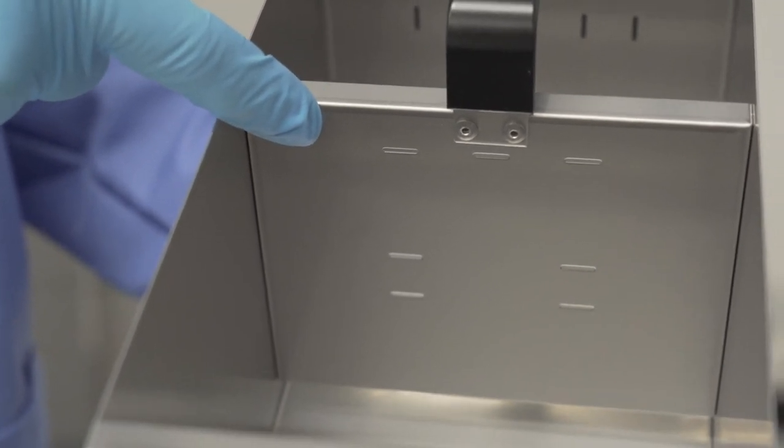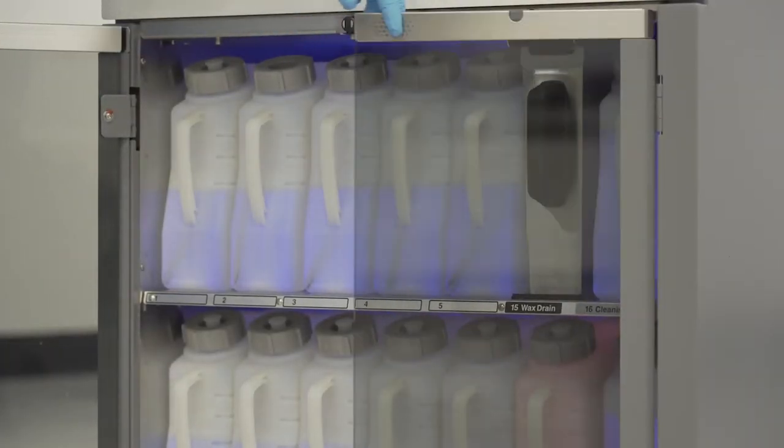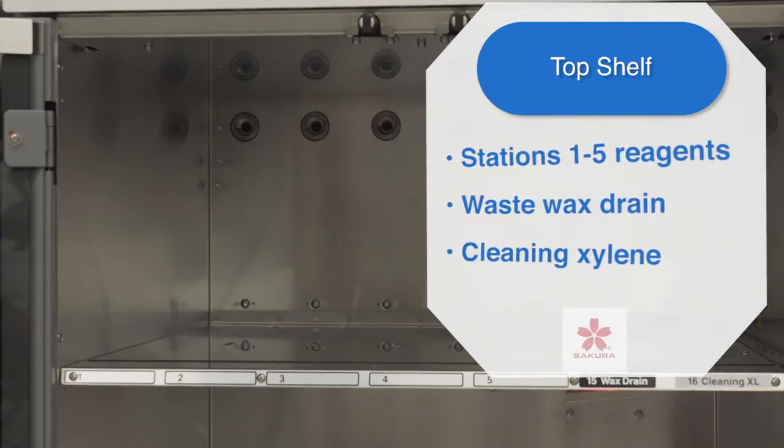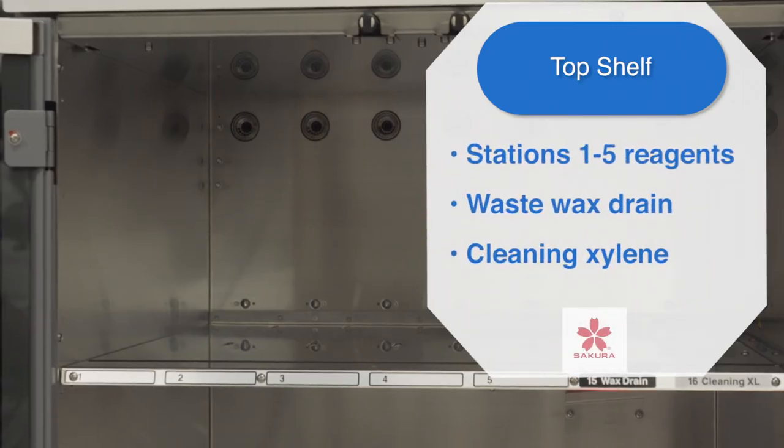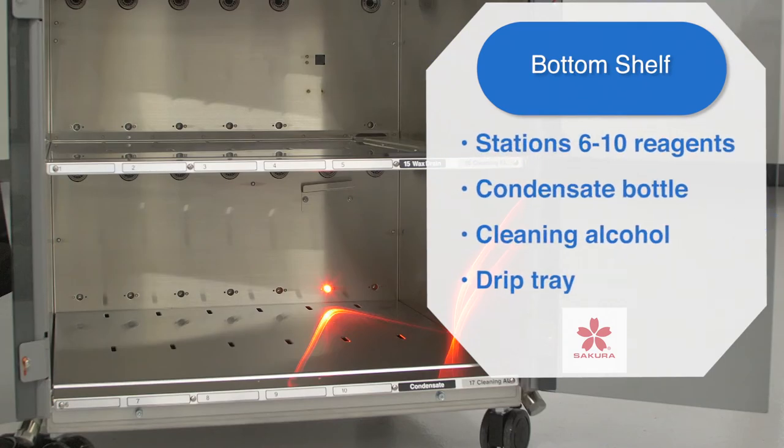The lower section of reagent module consists of 13 plastic containers and one metal wax drain. Ten containers are used for your processing reagents, stations one to ten. There are two shelves in the reagent module. The top shelf holds stations one through five processing reagents plus the waste wax drain and cleaning xylene. The bottom shelf holds stations six through ten processing reagents.